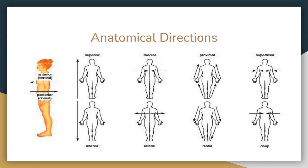Here are some pictures to help you understand. Anterior, also ventral, is to the front of your body; posterior, dorsal, to the back. Superior is above; inferior is below. Medial points to the middle of the body, while lateral is away from the center. You can look at the pictures to see proximal versus distal, and superficial versus deep.